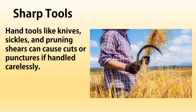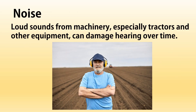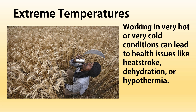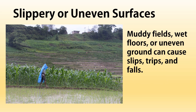Sharp tools — hand tools like knives, sickles, and pruning shears can cause cuts or punctures if handled carelessly. Heavy lifting — carrying heavy objects such as sacks of seeds, bales of hay, or large buckets can lead to back injuries or muscle strain. Noise — loud sounds from machinery, especially tractors and other equipment, can damage hearing over time, so better get some earplugs ready. Extreme temperature — working in very hot or very cold conditions can lead to health issues like heat stroke, dehydration, or hypothermia. Slippery or uneven surfaces — muddy fields, wet floors, or uneven ground can cause slips, trips, and falls.